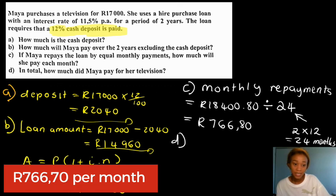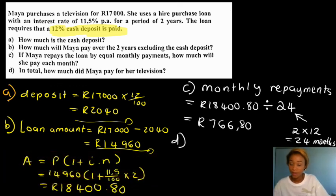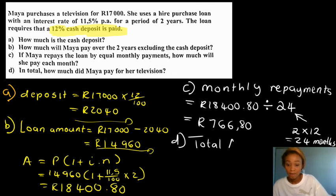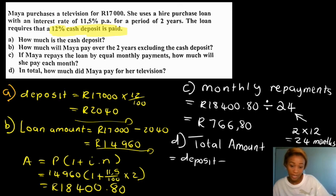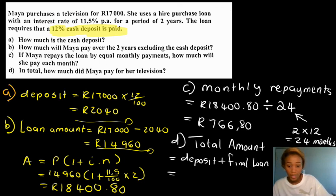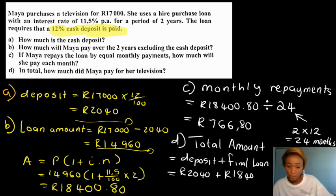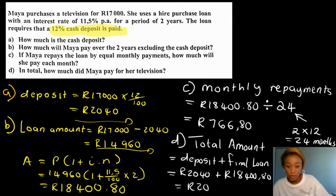For part D: in total, how much did Maya pay for the television set? It is the cash deposit she paid plus the final loan amount. That was 2,040 plus 18,480, so in total she actually paid 20,440 rands for the television.